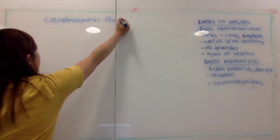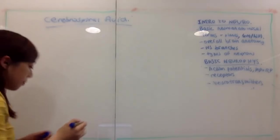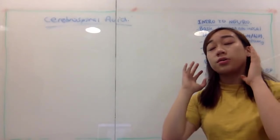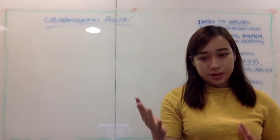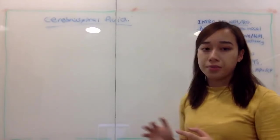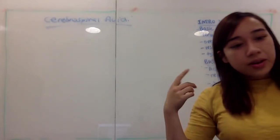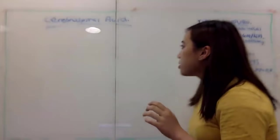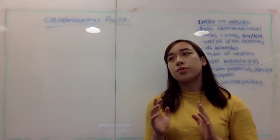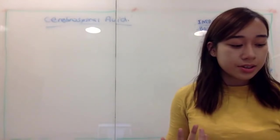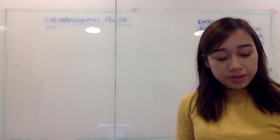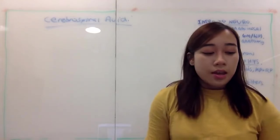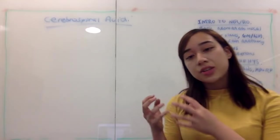Cerebrospinal fluid has a lot of functions, but the main thing to know is that it acts like a shock absorber — when your skull gets hit, your brain doesn't directly hit the skull itself; it's cushioned by this layer of fluid. This fluid is also found in the ventricles and cycles around. One important note: your textbook says there are 10 times the amount of glial cells compared to neurons, but current thinking suggests they're actually equal in number.